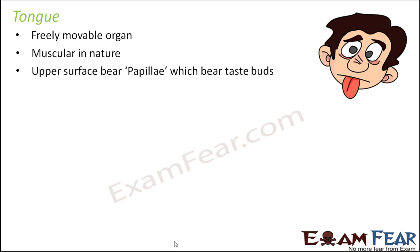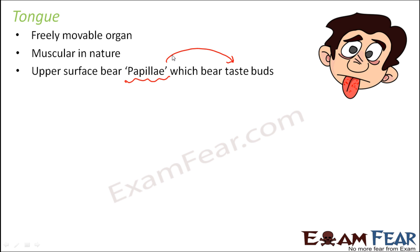The tongue also bears taste buds which help you to sense the taste of food. The upper surface of the tongue bears papillae, which bear the taste buds. Papillae are small hair-like structures present on the upper surface. If you observe your tongue closely, you will see a rough texture, and that rough texture is because of these fine hair-like structures known as papillae. Not all, but most papillae are associated with taste buds.